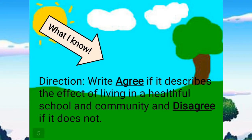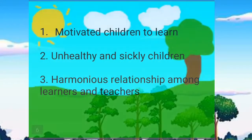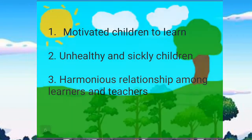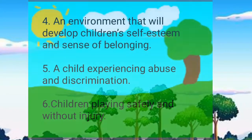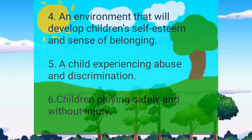Before we start our new lesson, let us first review our previous lesson. Write 'agree' if it describes the effect of living in a healthful school and community, and 'disagree' if it does not. Number 1: motivated children to learn. Number 2: unhealthy and sickly children. Number 3: harmonious relationship among learners and teachers. Number 4: an environment that will develop children's self-esteem and sense of belonging. Number 5: a child experiencing abuse and discrimination.